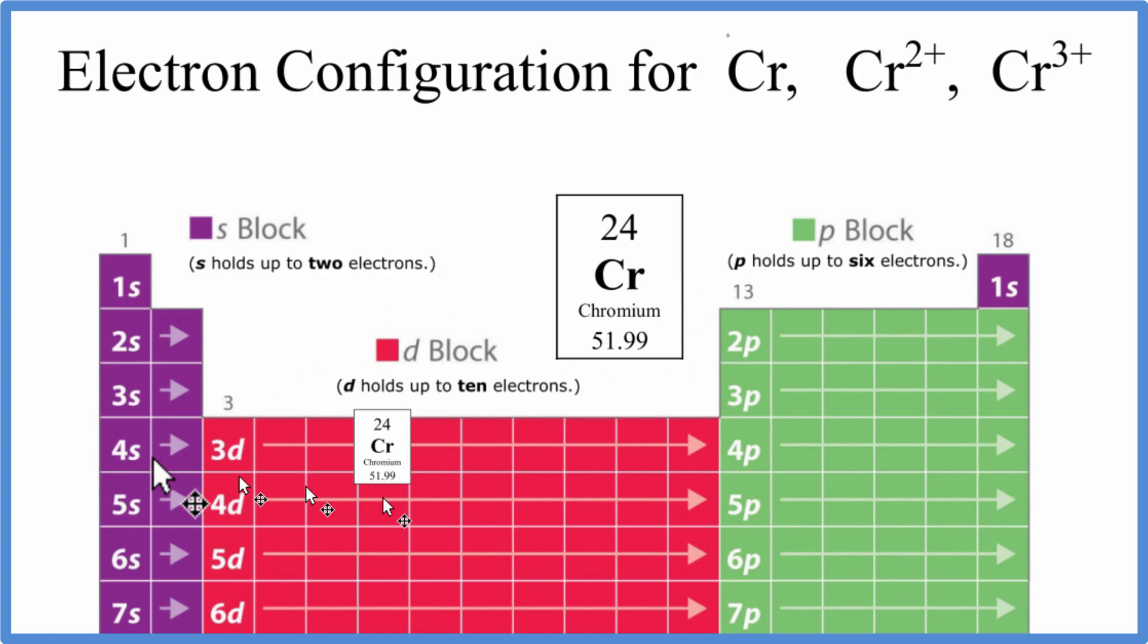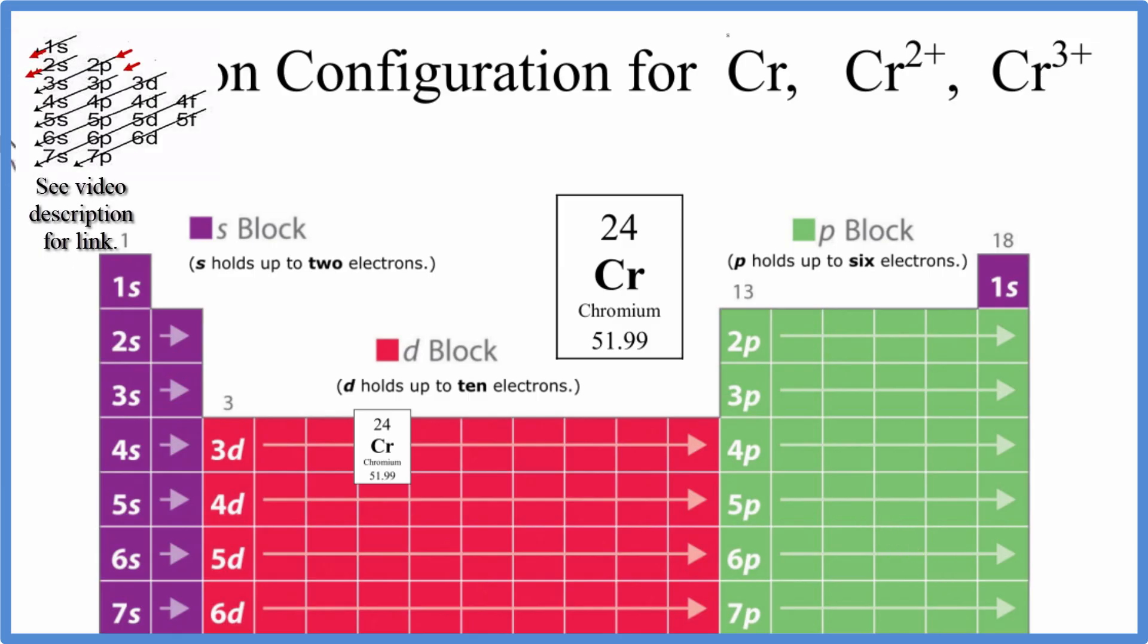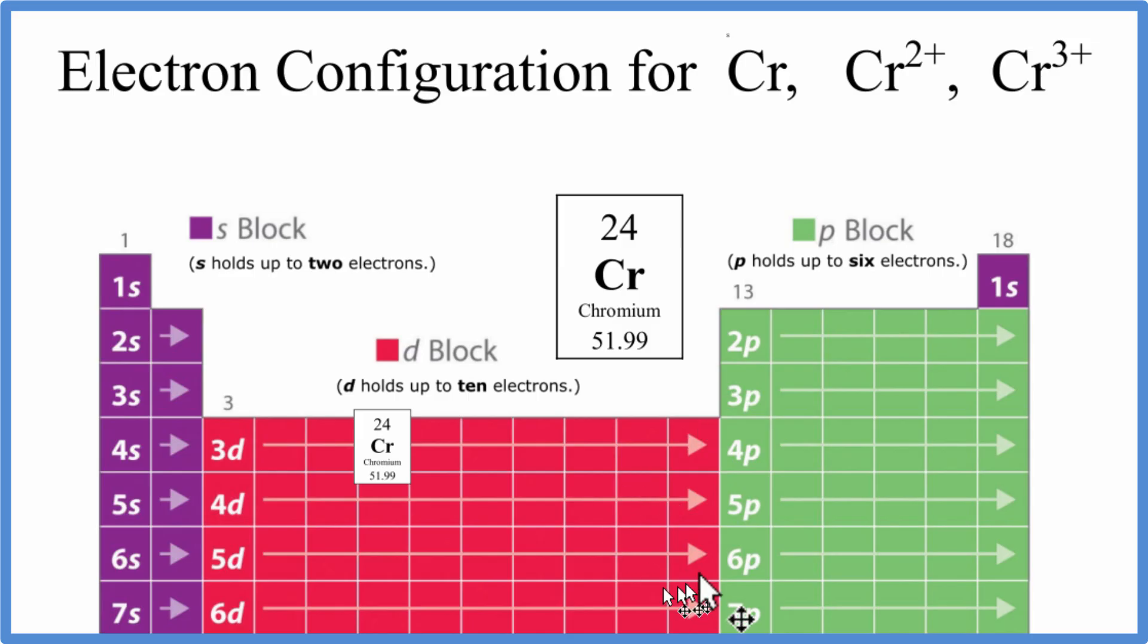To write the electron configuration for chromium, we'll use this periodic table here broken up into these orbital blocks. You can also use this chart here. There's a link in the description on how to do that. This helps explain how the periodic table is organized in relationship to these configurations.